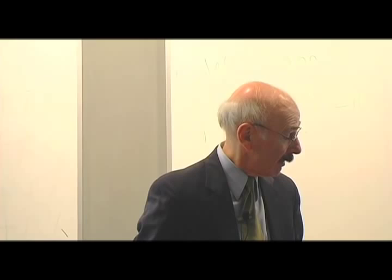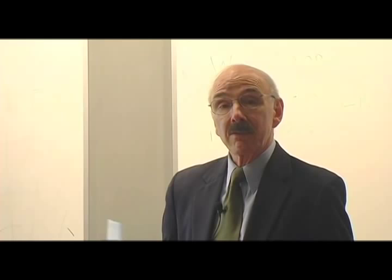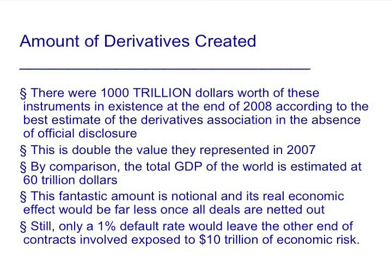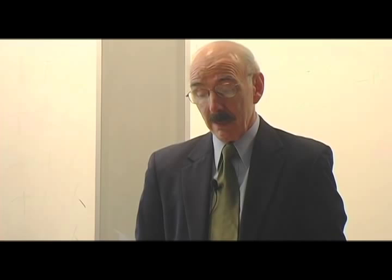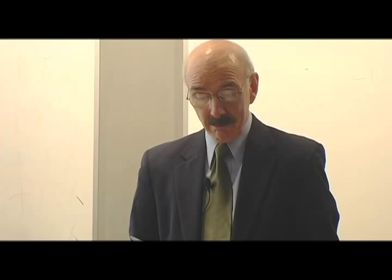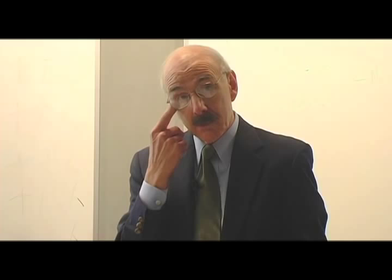By the best reckoning we can come up with — since disclosure is voluntary — there are about $1,000 trillion worth of these derivatives in the market worldwide right now. That's a fantastical number, and this is double the value they represented in 2007. By comparison, the entire gross domestic product of the world is only $60 trillion, the U.S. residential real estate market is $23 trillion, all U.S. stock markets are $15 trillion, and all world stock markets have a value of $50 trillion. So $1,000 trillion, or a quadrillion, is quite a number.